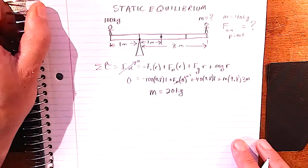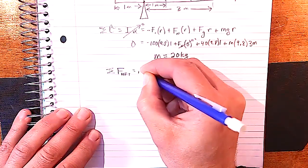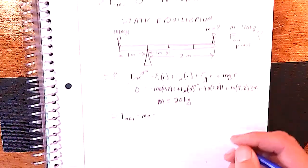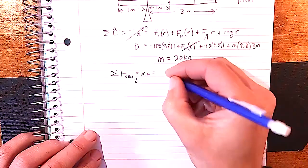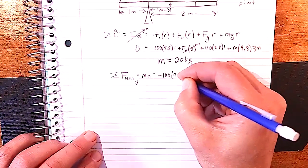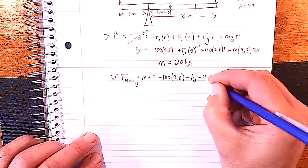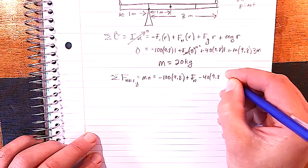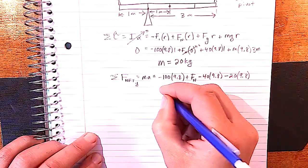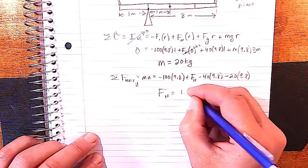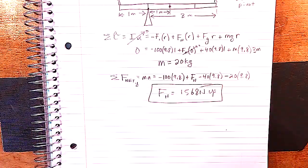To find the force on the fulcrum we write a net force equation: F_net = ma = 0 in the y-direction. Summing all vertical forces: minus 100 times 9.8 for the first kid, plus the normal force acting up, minus the beam's weight acting down, minus the 20 kg kid's weight acting down. Solving gives a normal force equal to 1568 newtons, which is positive — meaning it acts upward, as expected.